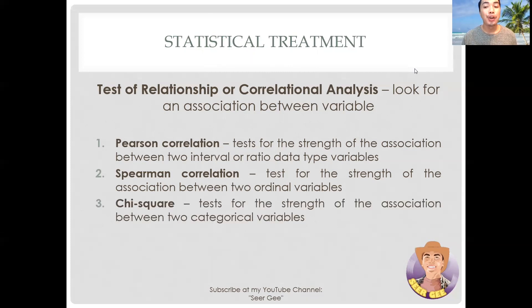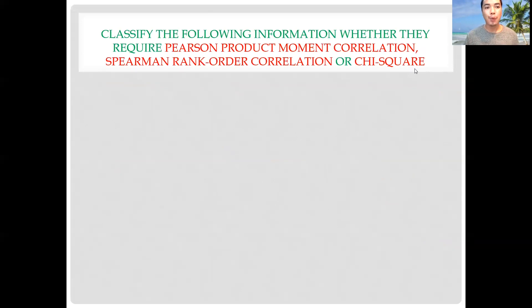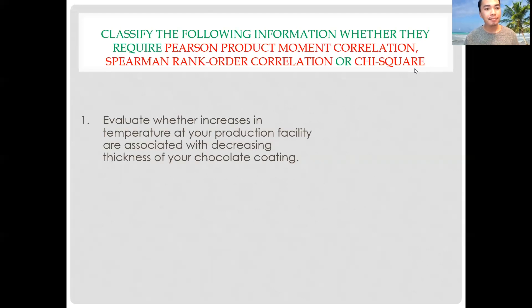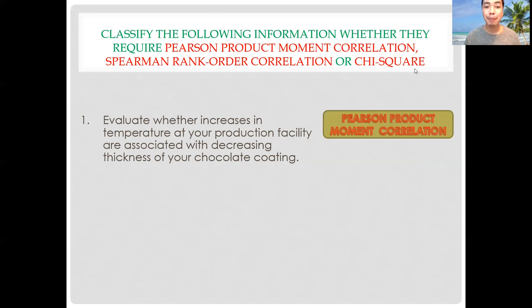Let's have a test. Classify the following: Pearson product-moment correlation, Spearman rank-order correlation, or chi-square. Number one: evaluate whether increases in temperature at your production facility are associated with decreasing thickness of your chocolate coating. Is it Pearson, Spearman, or chi-square? The answer is Pearson product-moment correlation, since we will be dealing with temperature which is classified as interval-type data.